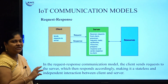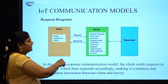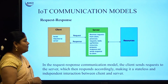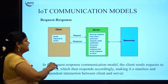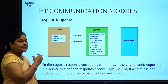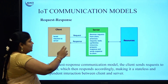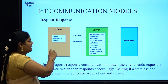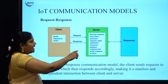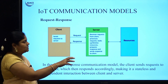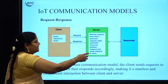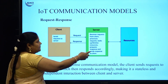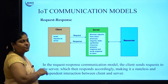In the request-response communication model, there are three different parties: client, server, and resources. How this communication model works is: the client sends a request to the server. The server sees what is being asked by the client, checks the resources, fetches the data, and gives the response back to the client. So the client asks for a request and the server gives a response.